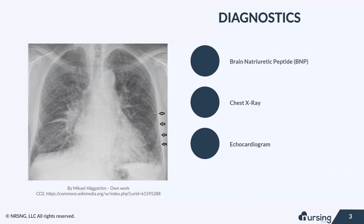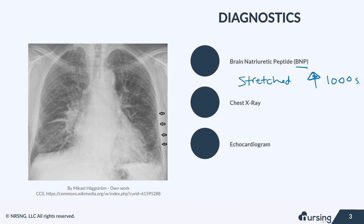There are multiple ways we can diagnose and classify heart failure, but we want you to know these three. The lab value we use is called brain natriuretic peptide, or BNP, and it is released whenever the ventricles are stretched. In congestive heart failure, when we see that severe volume overload, we can see this number jump super high up into the thousands. We'll talk much more detail about this value in the lab course.